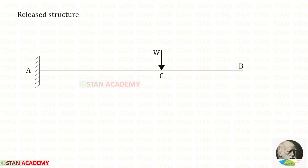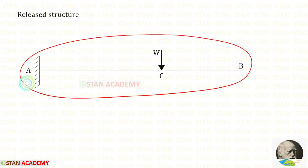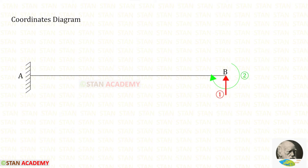At point B, I have removed MB and RB, so point B becomes a free end. Previously it was a fixed beam, but now it has become a cantilever beam. Now let us make the coordinates diagram.